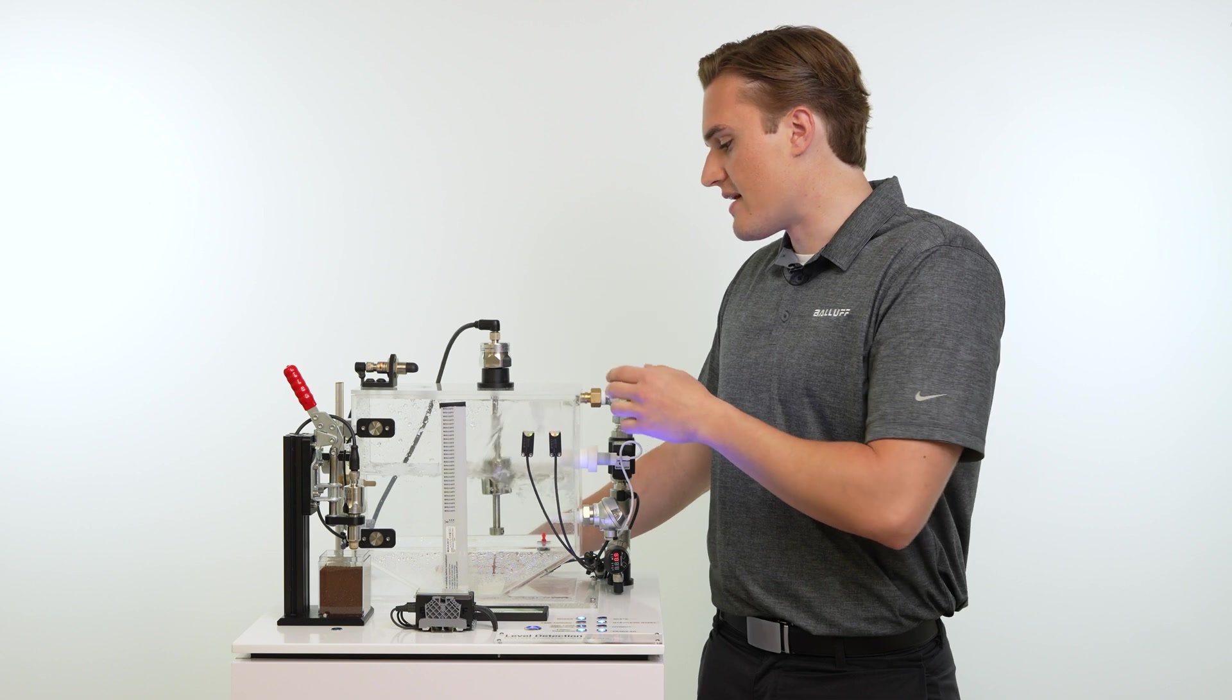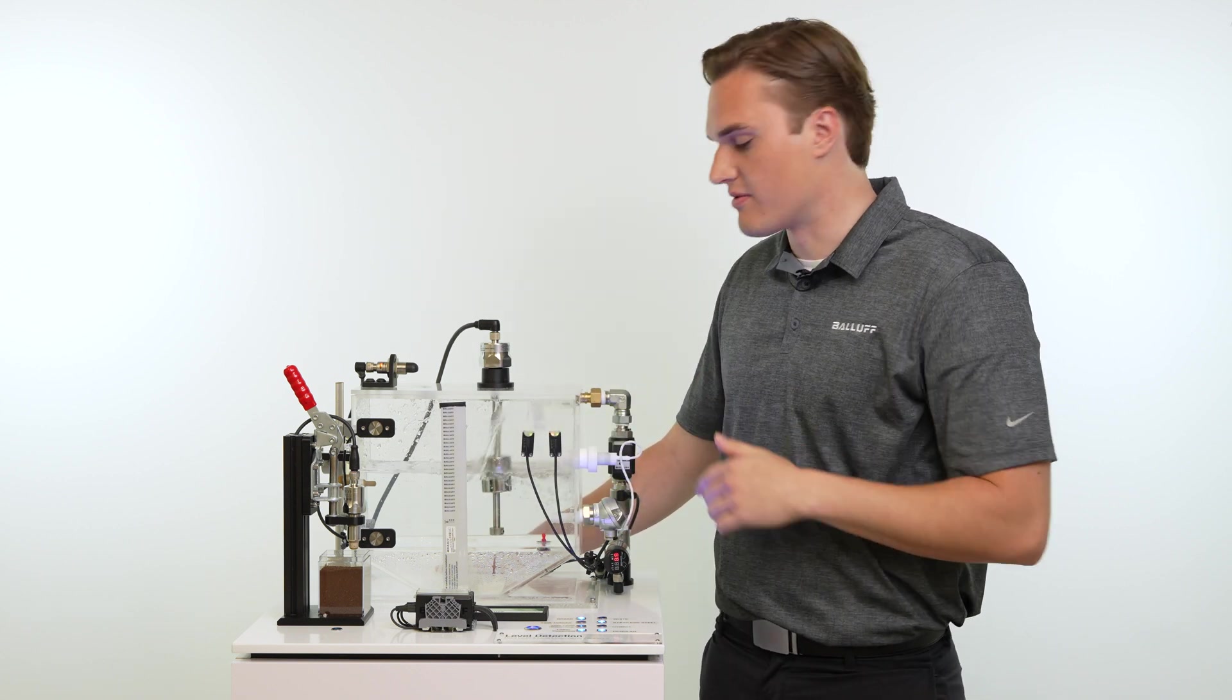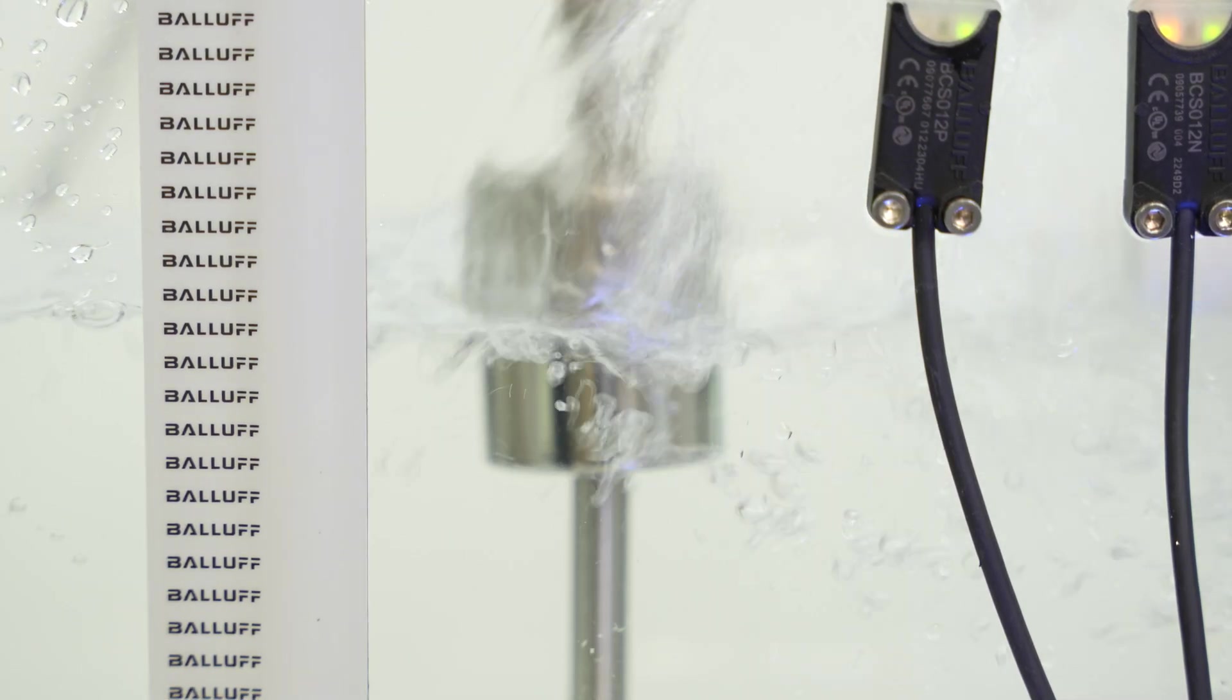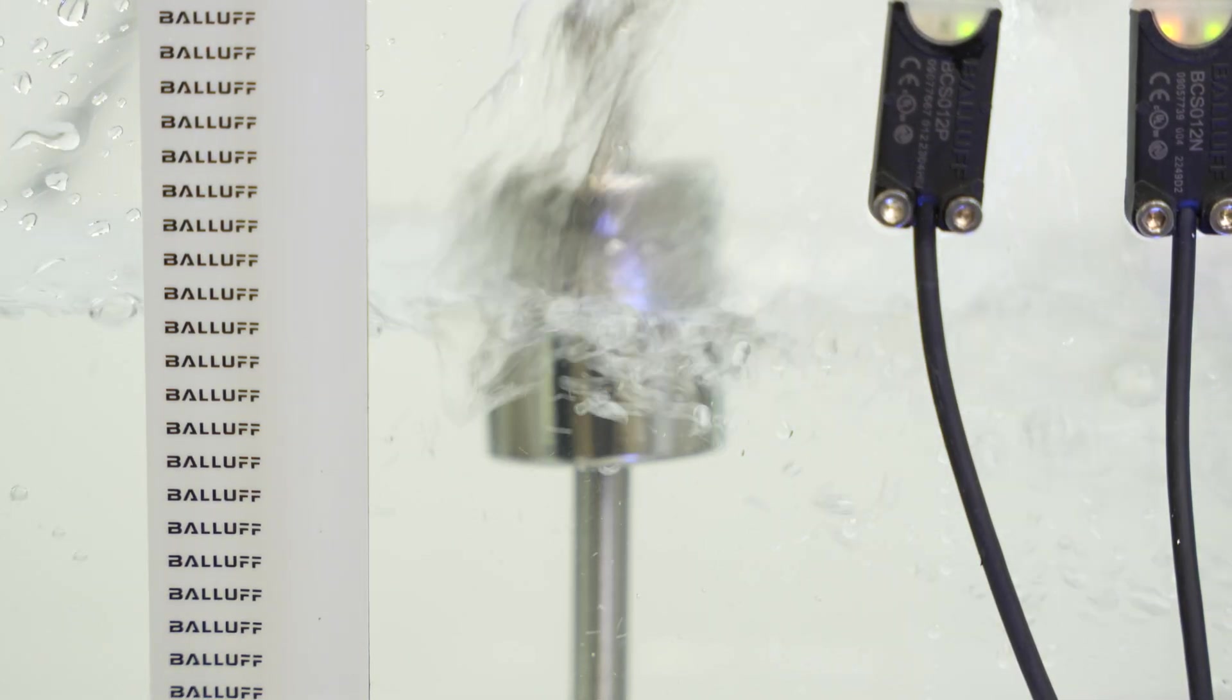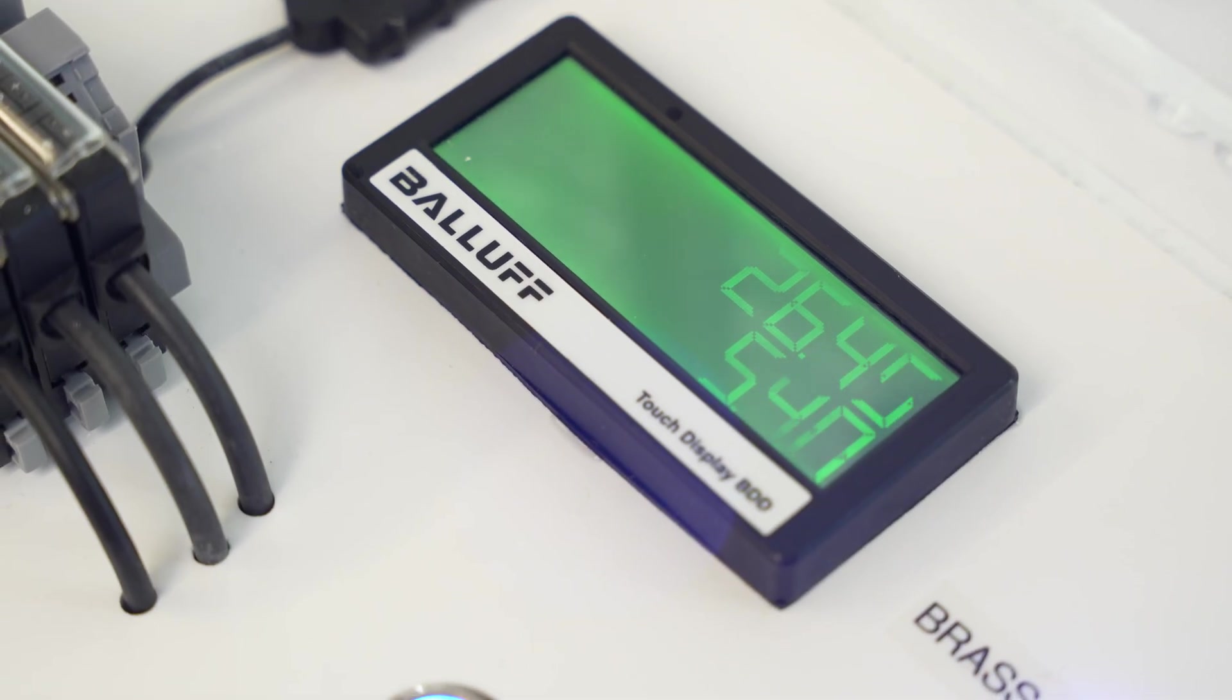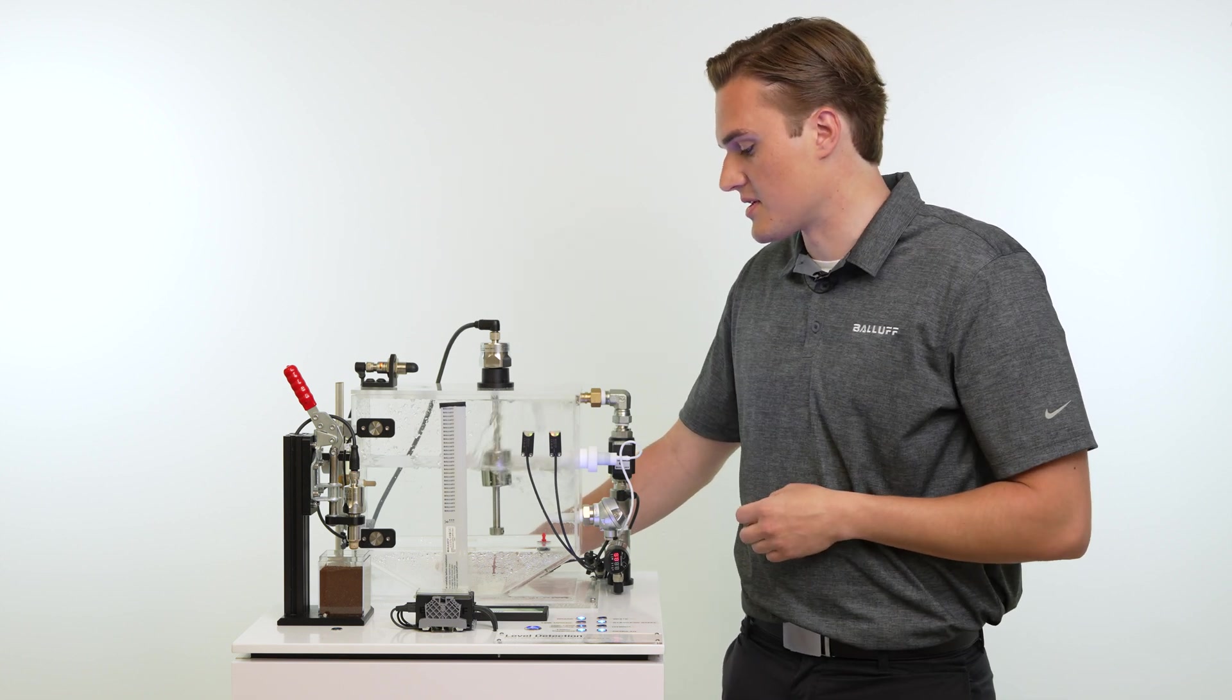Our analog sensors are now providing a true sense of level throughout the tank. The linear transducer with the float is beginning to rise as level increases. The capacitive strip tape is giving us an analog reading as the level increases and the ultrasonic at the top is also giving us that reading.